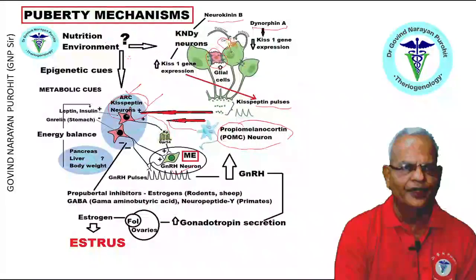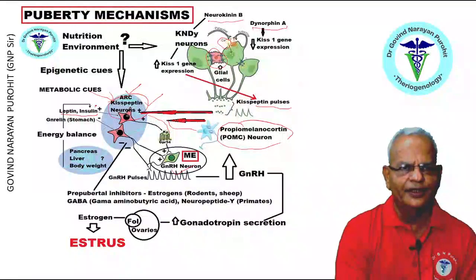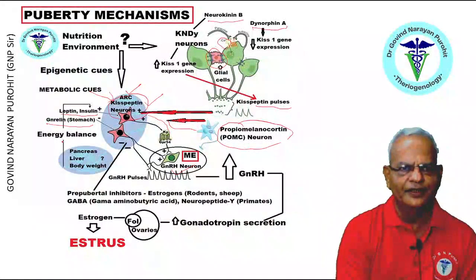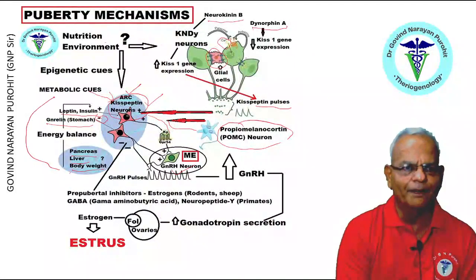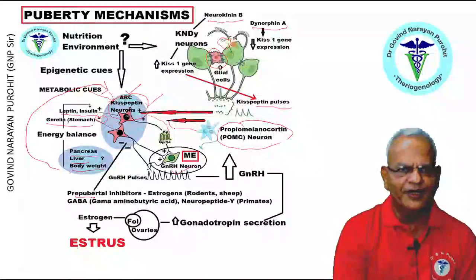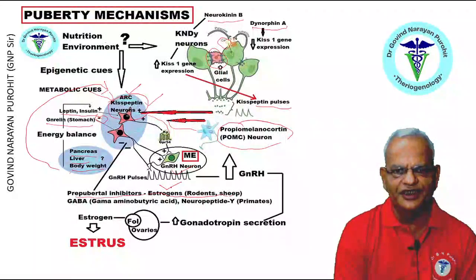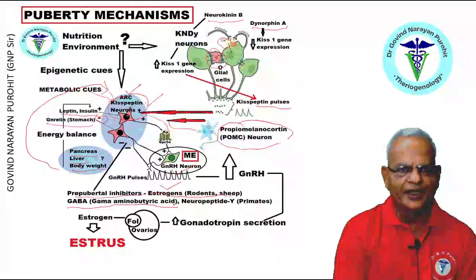Besides that, nutrition, the environment, epigenetic cues and metabolic cues also have a role in kisspeptin stimulation. Leptin, present in the adipose tissue, and insulin have positive roles on kisspeptin neuron stimulation, whereas ghrelin, which is secreted from the stomach, has a negative role on kisspeptin stimulation. The energy balance, the pancreas, liver, and the body weight of the animal have a complex interplay in regulating kisspeptin neurons. Before puberty, the inhibitors in sheep and rodents are estrogens, whereas GABA (gamma-aminobutyric acid) and neuropeptide Y are the inhibitors in primates.